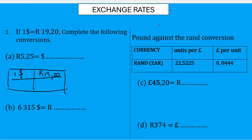If you want to convert rands, we put rands under rands. We've got R5.25, so we're going to multiply by one and then divide by 19.20. So we've got 5.25 times 1 divided by 19.20.